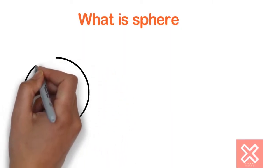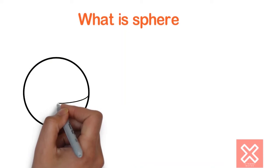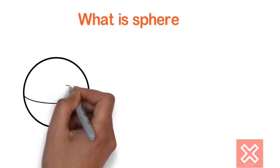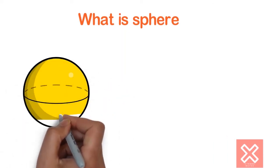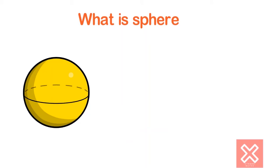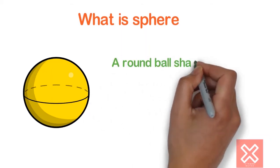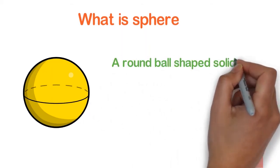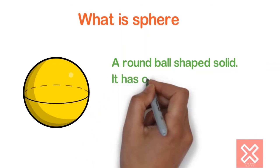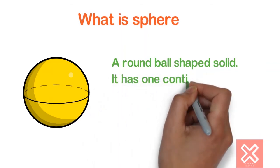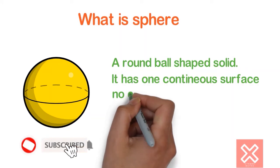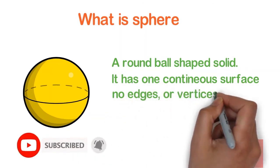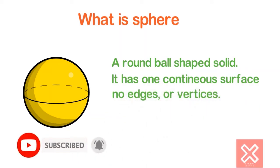A sphere is a geometrical object in three-dimensional space that is the surface of a ball — a round ball-shaped solid. It has one continuous surface and no edges or vertices.